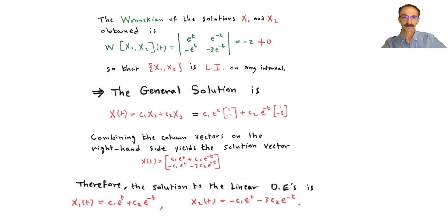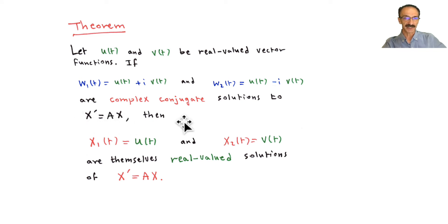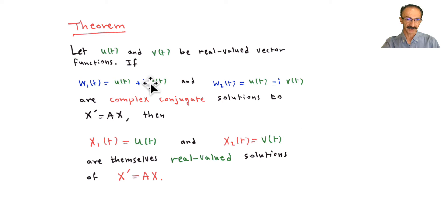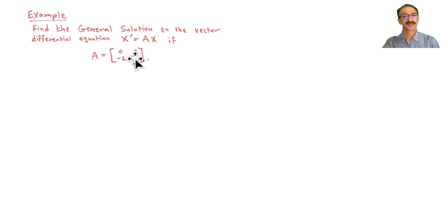Now the introduction to example two with complex conjugates. Let u(t) and v(t) be real-valued vector functions. If w1 and w2 are complex conjugate solutions to x' = Ax, we can extract x1 from the u(t) part and x2 from the v(t) part. These are themselves real-valued solutions to x' = Ax.